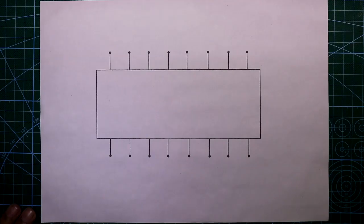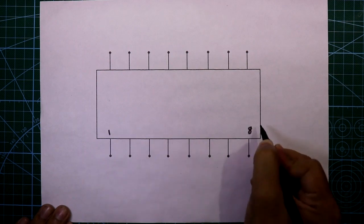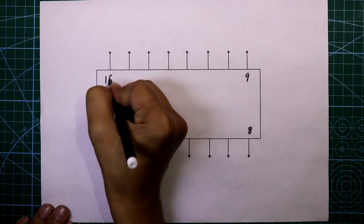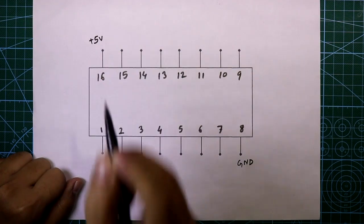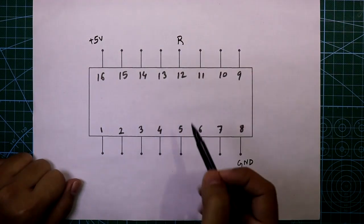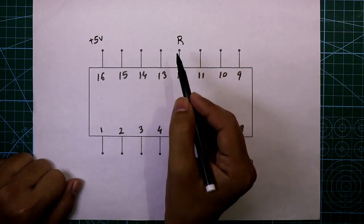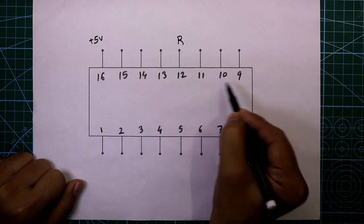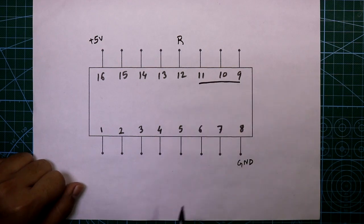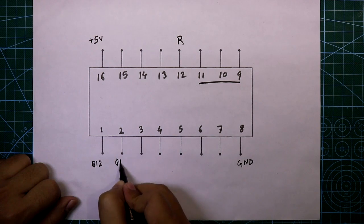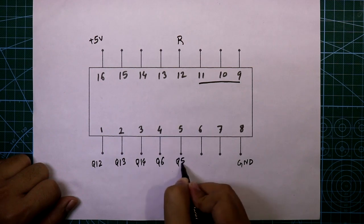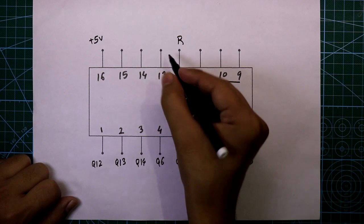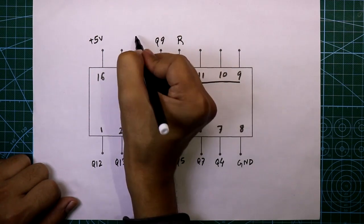Let's see the pin diagram of IC 4060. Pin number 8 is connected to ground, pin 16 is connected to +5V. Pin number 12 is the reset pin and is normally connected to ground. Pin numbers 11, 10, and 9 are for the input clock signal. The output pins are: pin 1 is Q12, pin 2 is Q13, pin 3 is Q14, pin 4 is Q6, with Q5, Q7, Q4, pin 13 is Q9, pin 14 is Q8, and pin 15 is Q10.